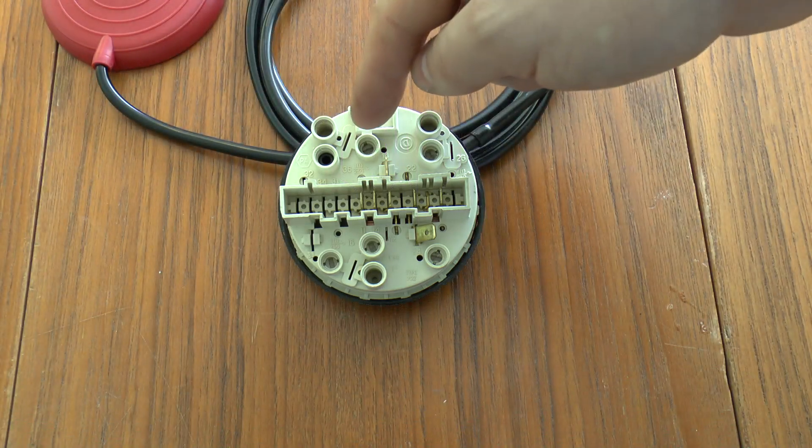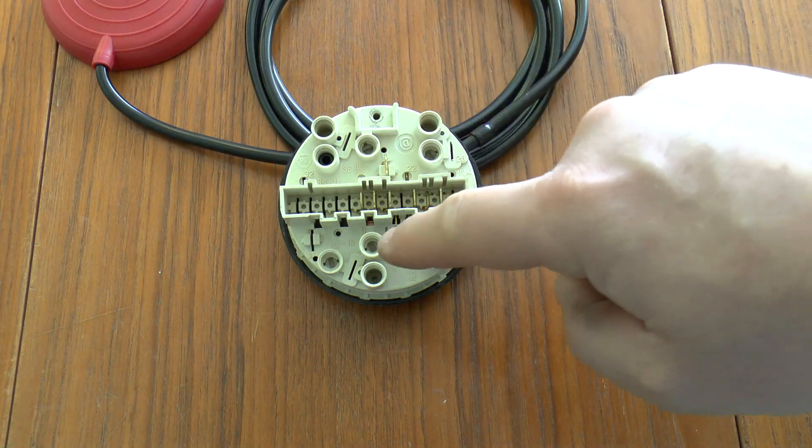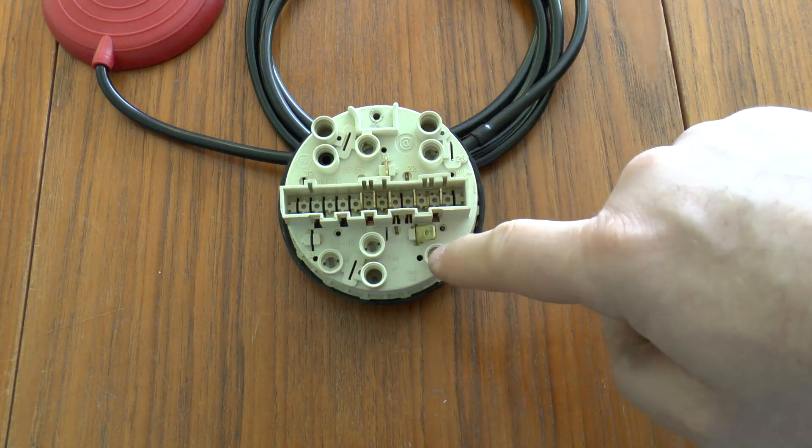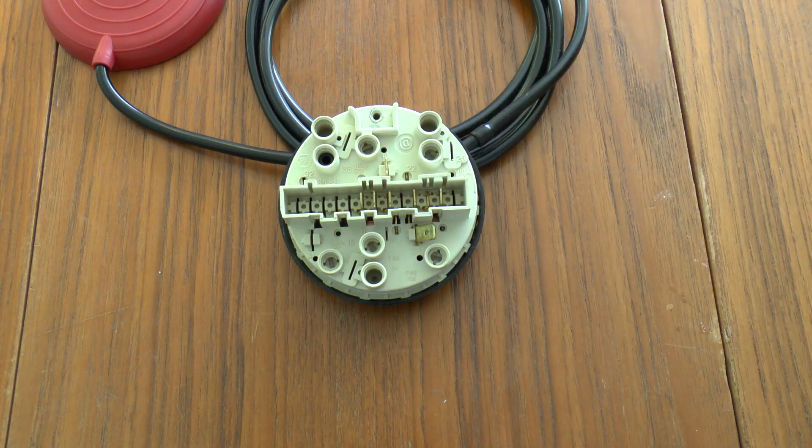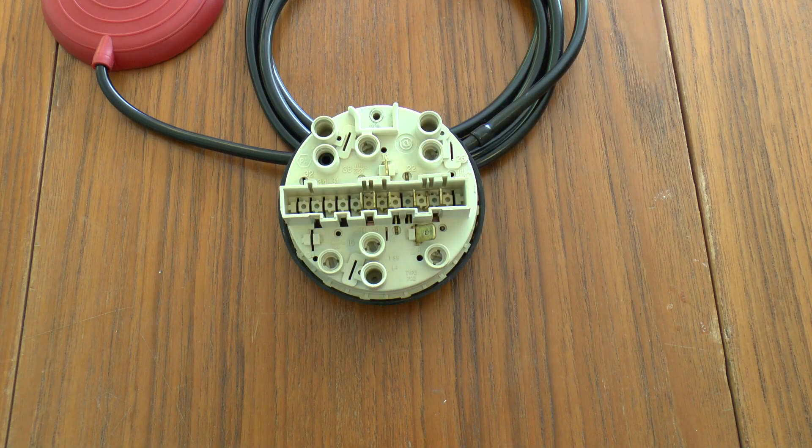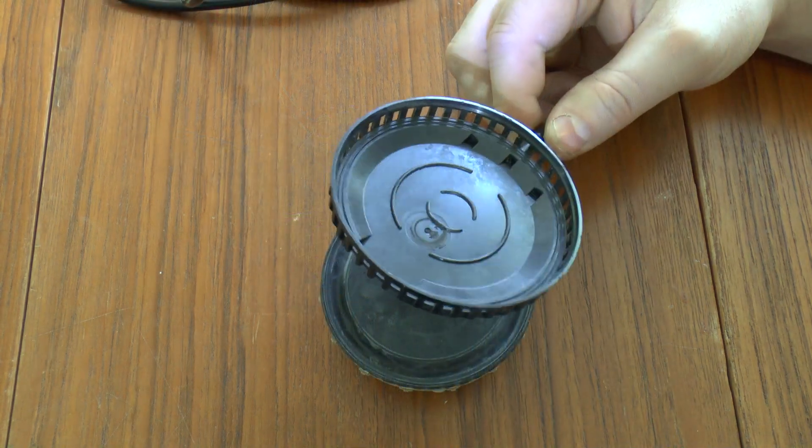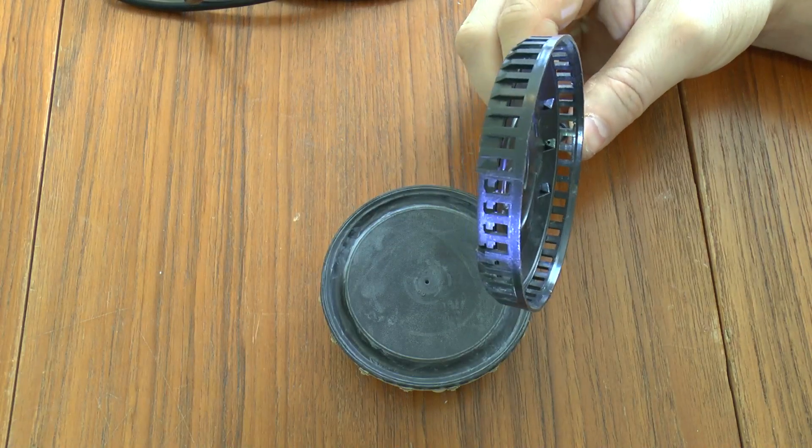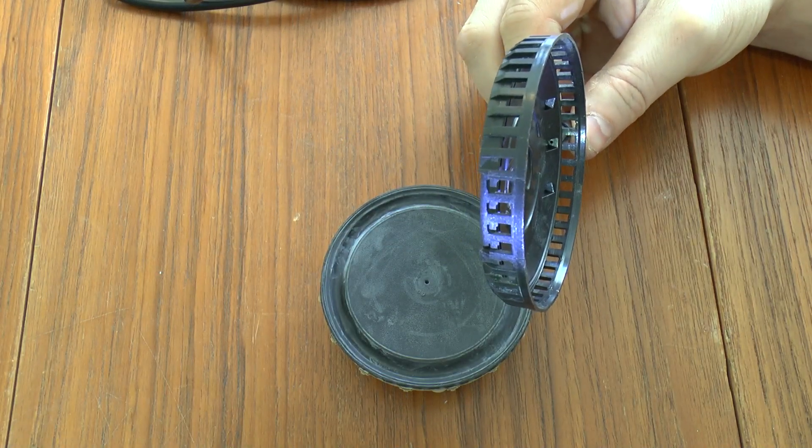You can also see we've got these adjustment screws. I'll show you what those do in just a second. Let's crack it open. This is the lid with the air intake, which you can see is a very small hole at the end of that square recess.